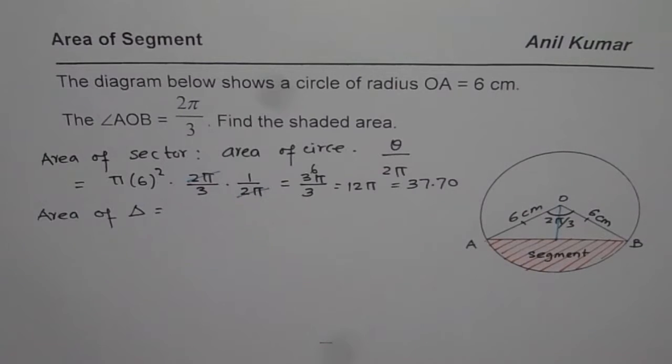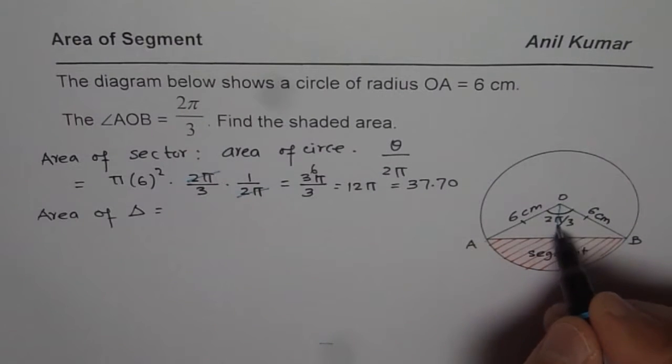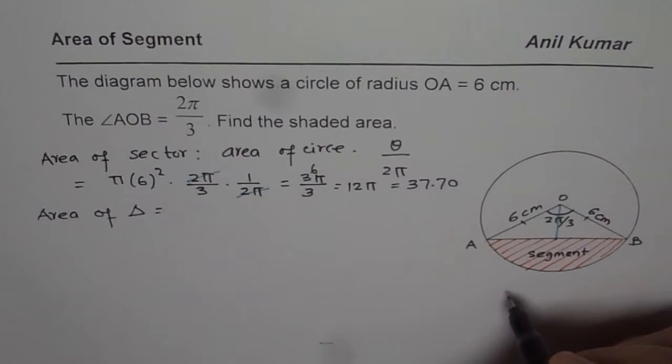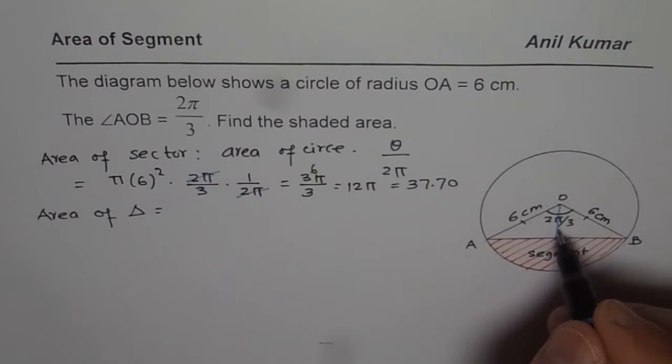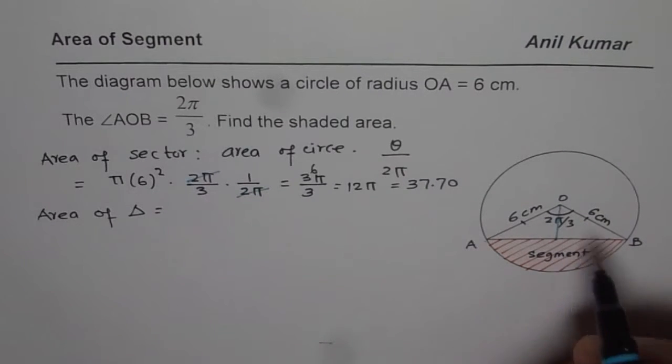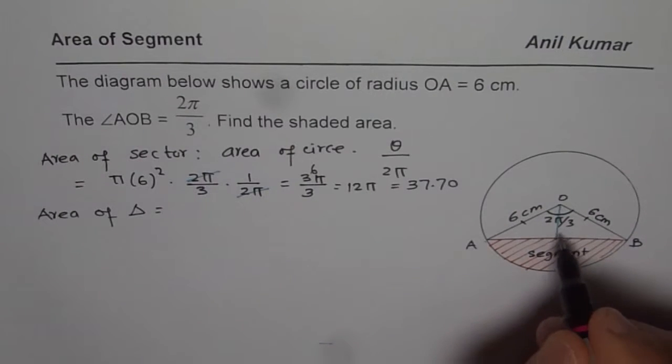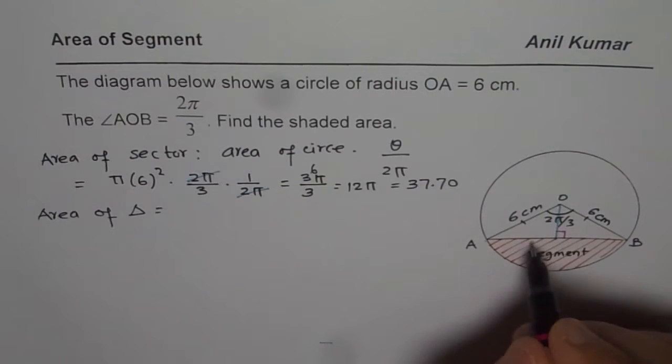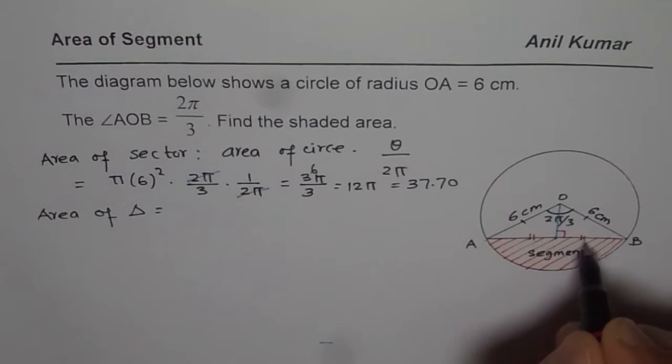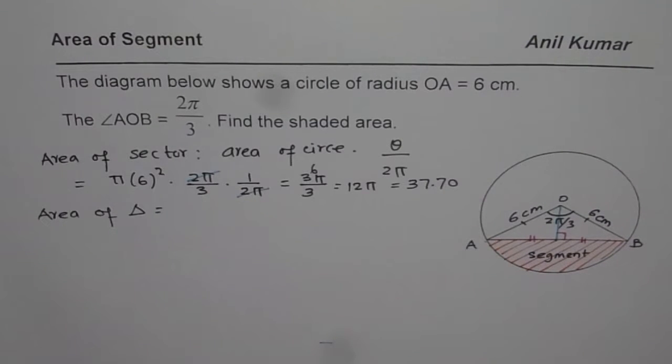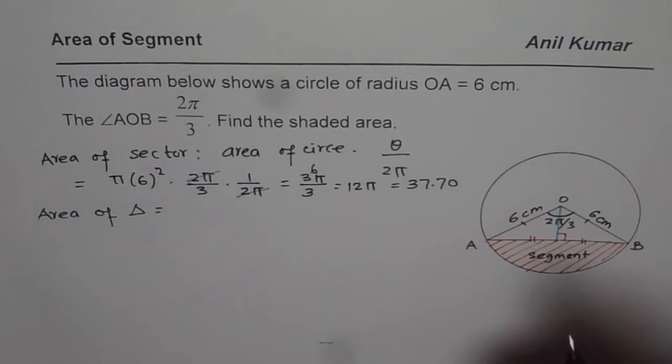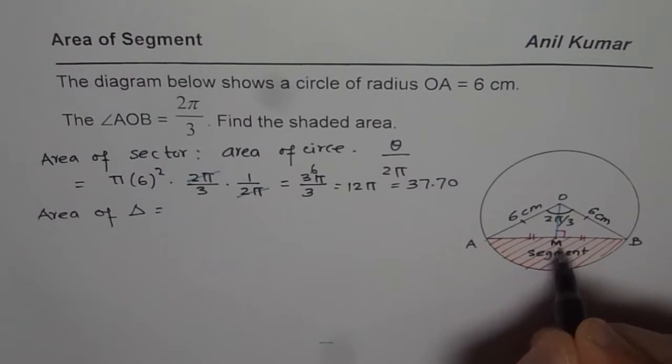That really does not solve our problem because we also need to find the height. So to find the height what we can do is if I drop a perpendicular from the center to the chord AB, in that case it is going to divide AB into two equal parts. So let us call this center point as M midpoint.